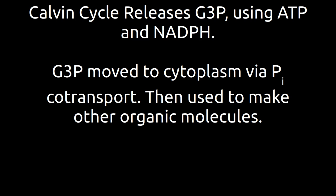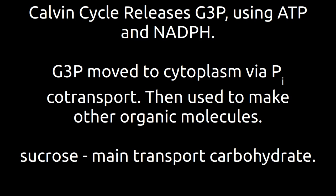We're going to move it along with phosphates using phosphate co-transport, and then use this glyceraldehyde 3-phosphate to make other organic molecules. For instance, you can run this into glycolysis — all of those enzymes in glycolysis can look backwards as well, and you get glucose out of that. Eventually what plants tend to make is sucrose, which is the main transport carbohydrate in most plants.